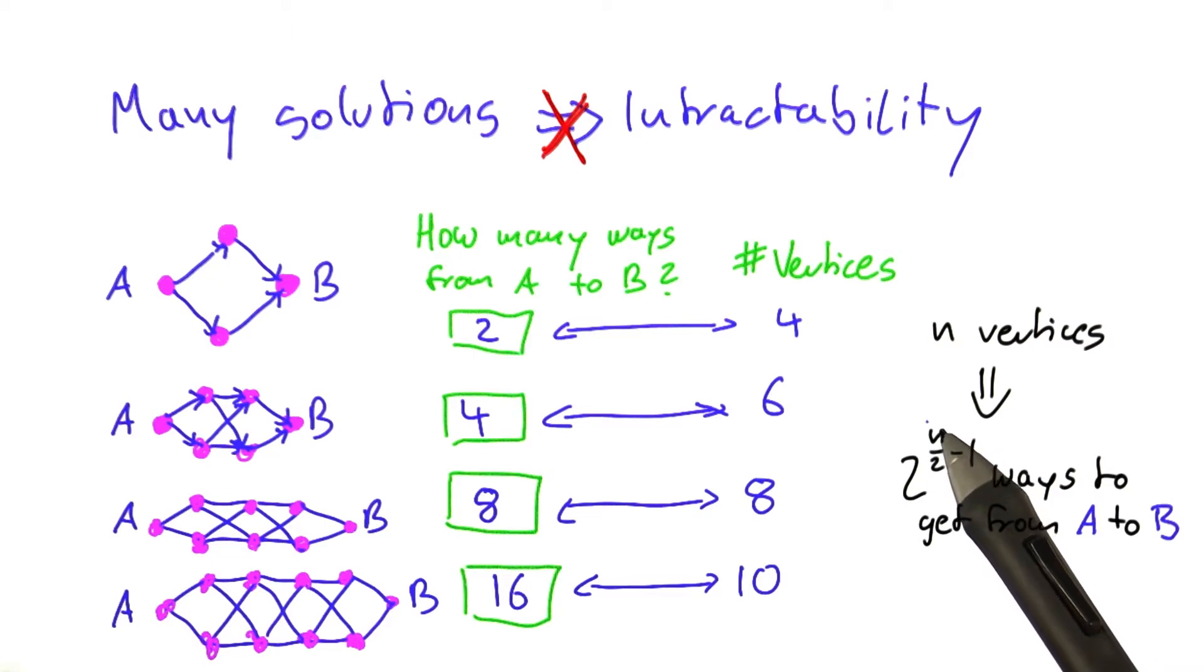In the quiz, we saw that each time we add two vertices, we have to multiply by 2. This is exactly what happens here, because if we add two vertices, then the exponent will increase by 1.